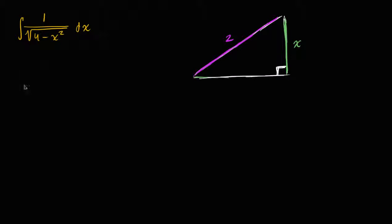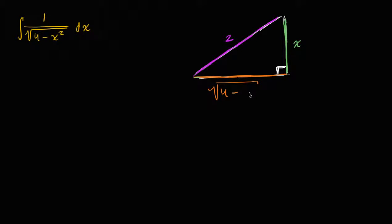Then what would the other non-hypotenuse side be? Using the Pythagorean Theorem, you get that it is going to be the square root of the hypotenuse squared — two squared, which is four — minus the other side squared, so minus x squared. That is exactly this expression. But still, how does that help us?